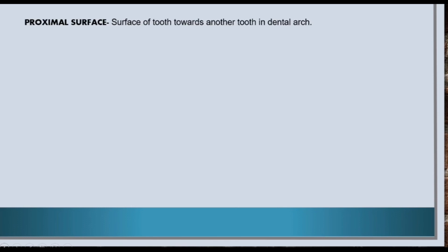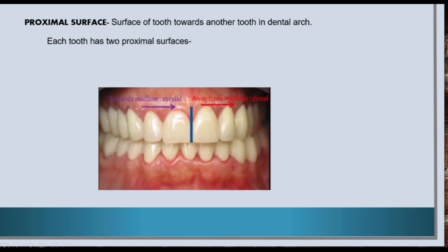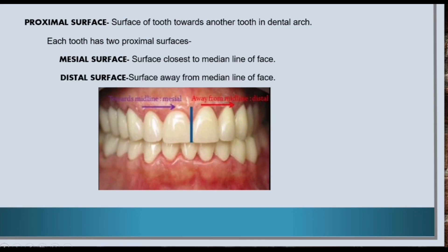Now let us know about the proximal surfaces. Proximal surface is the surface of the tooth towards another tooth in the dental arch. Each tooth has two proximal surfaces. The first one is mesial surface and the second is distal surface. Mesial surface is the surface closest to the median line of the face, whereas distal surface is the surface away from the median line of the face.